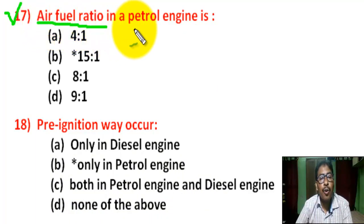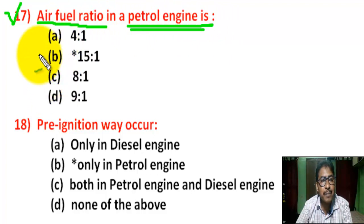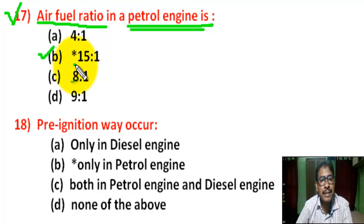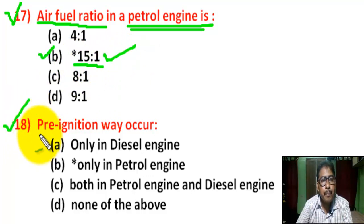Question number 17: The air-fuel ratio in a petrol engine is — there are four options. Correct answer is B — the air-fuel ratio in a petrol engine is 15:1.